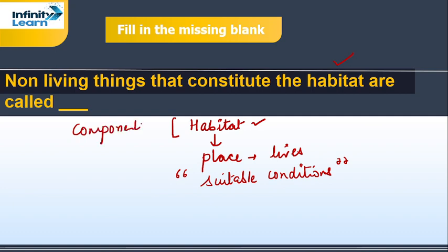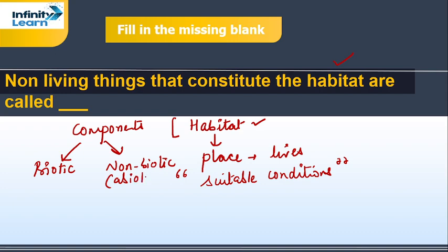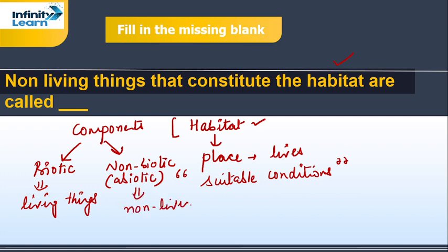There are two basic components in habitat, and those components are classified as biotic component and non-biotic component, or we can also call it abiotic component. Biotic component comprises of all the living things.